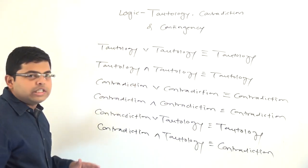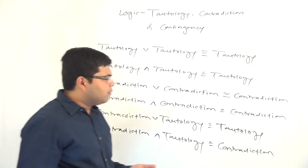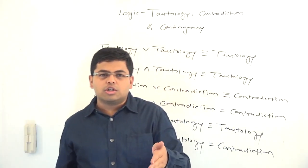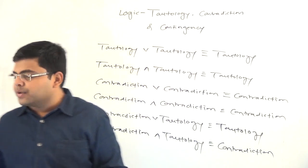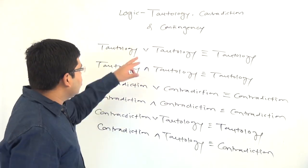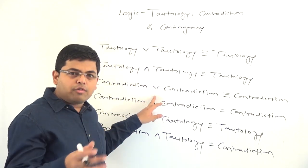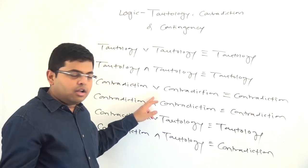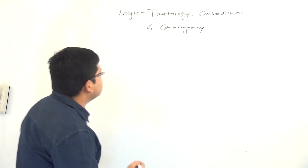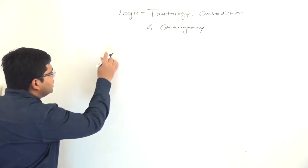These are the basic properties to remember. True∨true is always true; true∧true is always true; false∨false is always false; false∧false is always false; false∨true is always true; false∧true is false. In summary: disjunction and conjunction of tautologies give a tautology; disjunction and conjunction of contradictions give a contradiction; disjunction of contradiction and tautology gives a tautology; conjunction of contradiction and tautology gives a contradiction.